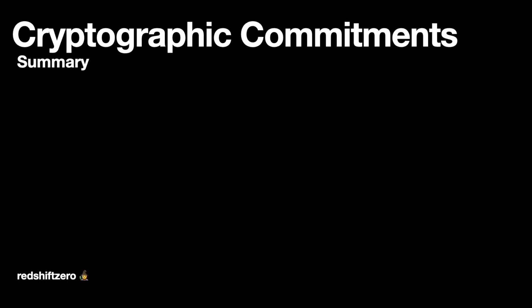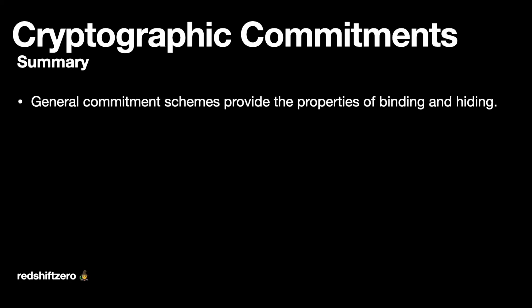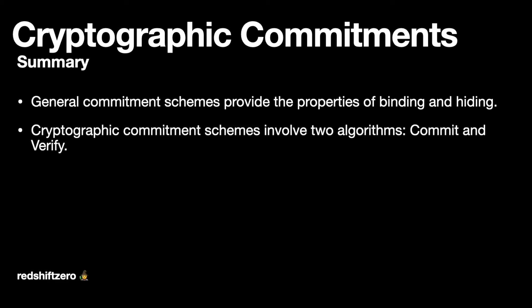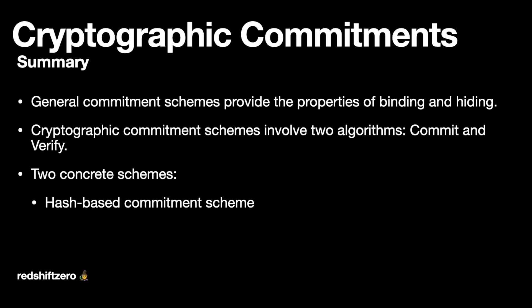So that was a whirlwind explanation of what a commitment scheme is in general, and the two properties that we want from the scheme: binding and hiding. We showed the two important algorithms for a cryptographic commitment scheme — the commit and verify algorithms — and then we showed two concrete schemes: one based on a collision resistant hash function, and the second based on a finite cyclic group where the discrete log problem is hard. This Pedersen commitment scheme has the bonus of being additively homomorphic. I hope this was useful, and thank you for watching.